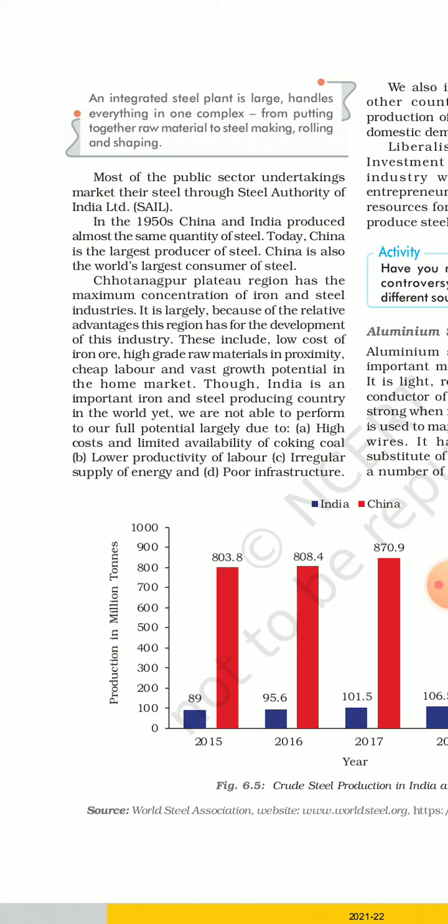The reasons include: high cost and limited availability of coking coal — coking coal used in blast furnaces is expensive and limited in supply. There is also lower productivity of labor, where worker skill levels are inadequate. Additionally, erratic energy supply — irregular electricity — and poor infrastructure including transportation facilities are major problems.